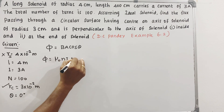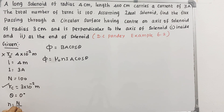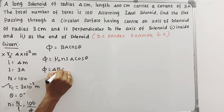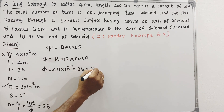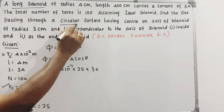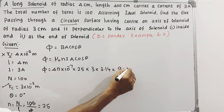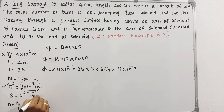phi = μ₀·n·I·A·cosθ. Here small n = N/L = 100/4 = 25 turns per meter. μ₀ = 4π × 10⁻⁷. I = 3 A. A = π·r² = 3.14 × (3 × 10⁻²)² = 3.14 × 9 × 10⁻⁴. So the answer is 0.27 × 10⁻⁶ Weber.